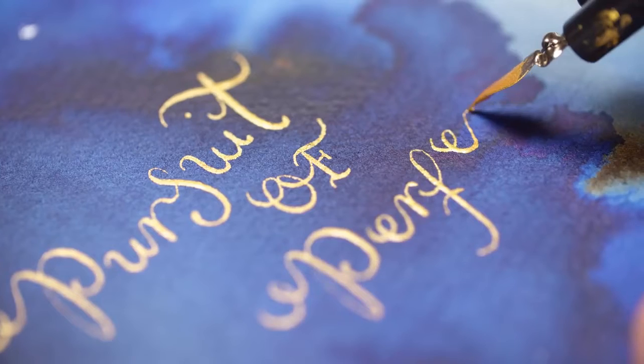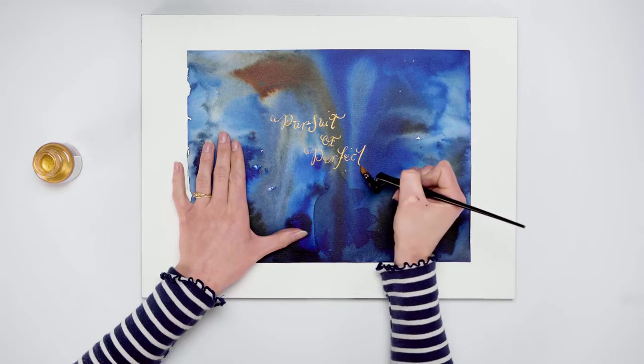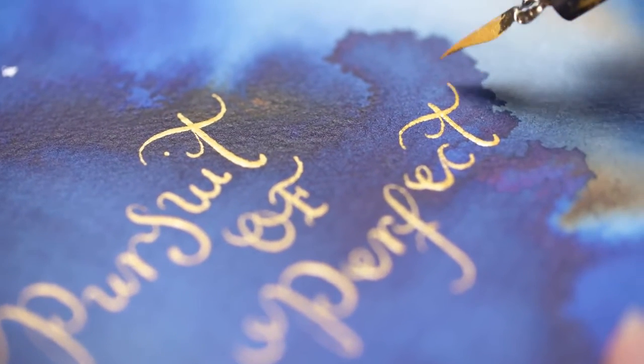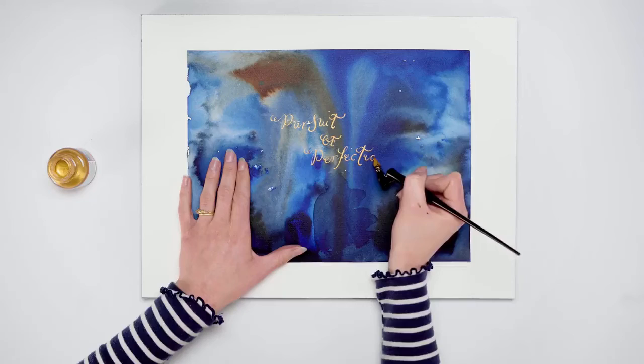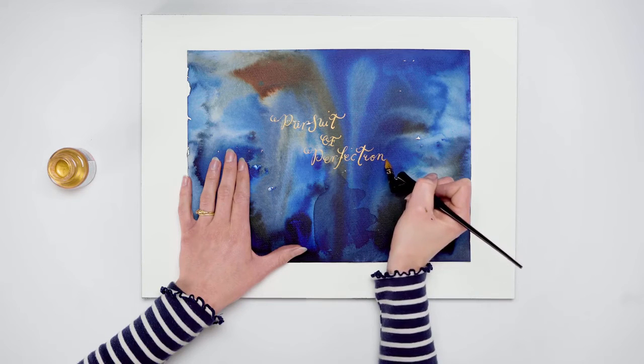And then the E-C-T, again ending with a big sweeping cross stroke on the T. And onto the I-O-N ending with another big sweeping flourish to frame the word and dot the I to finish the letter.